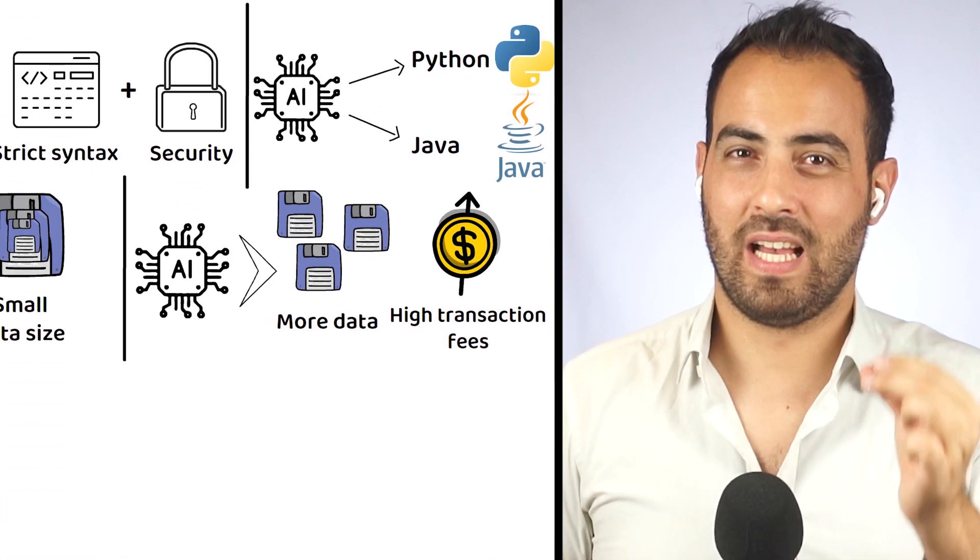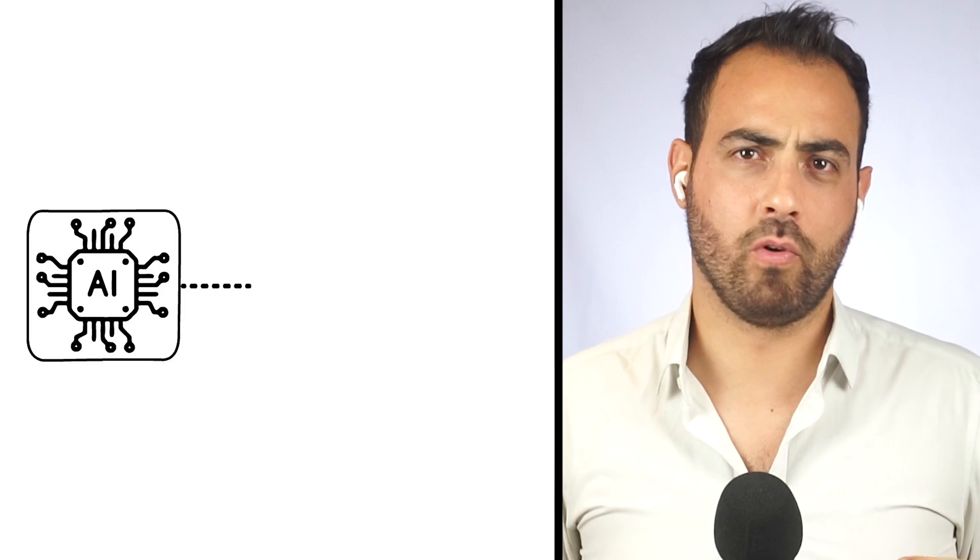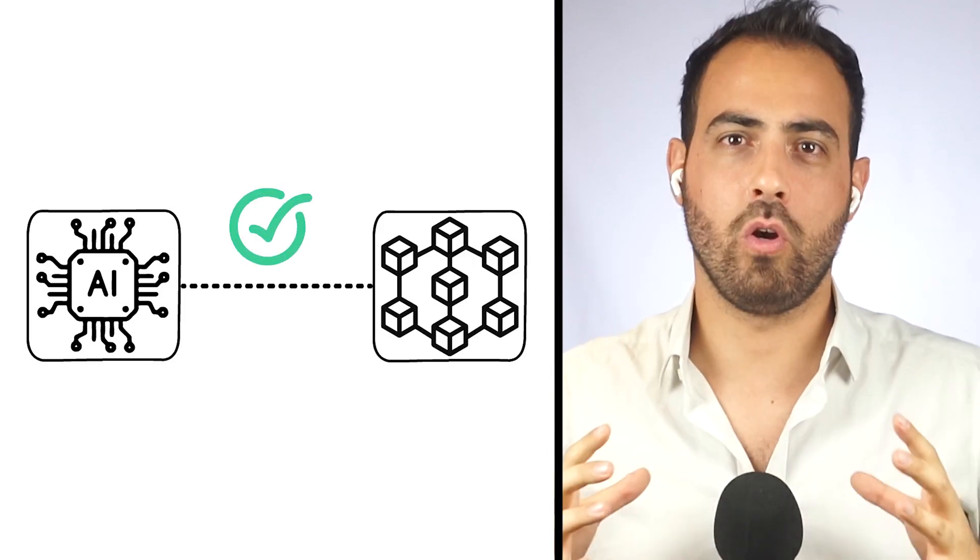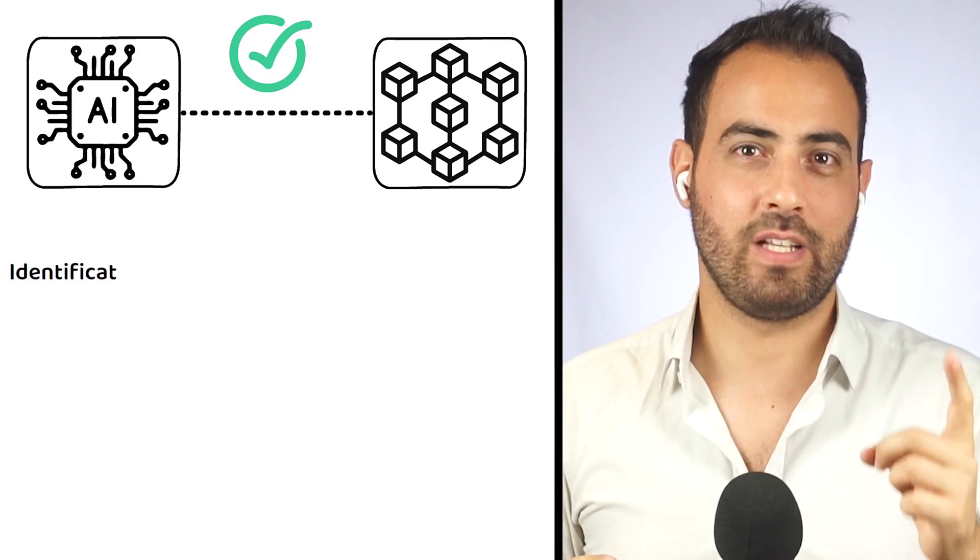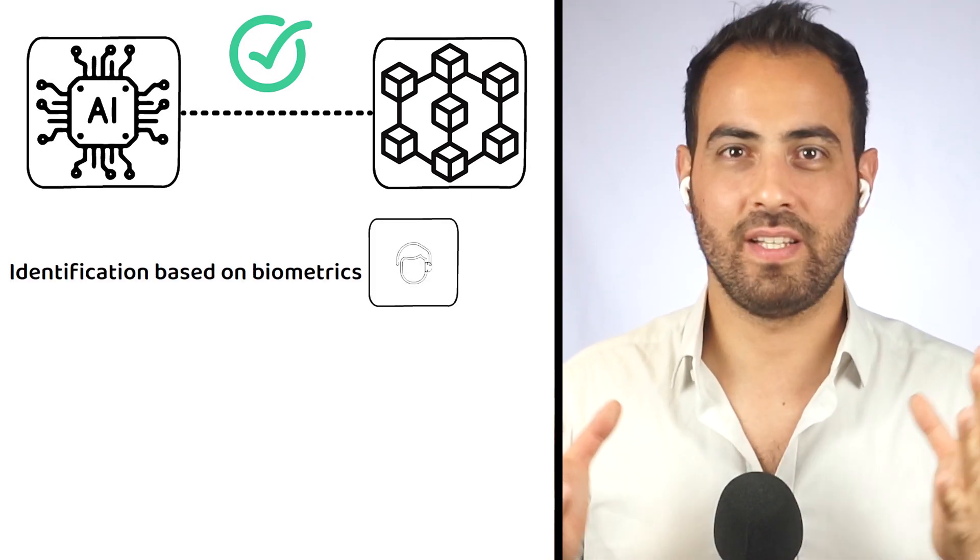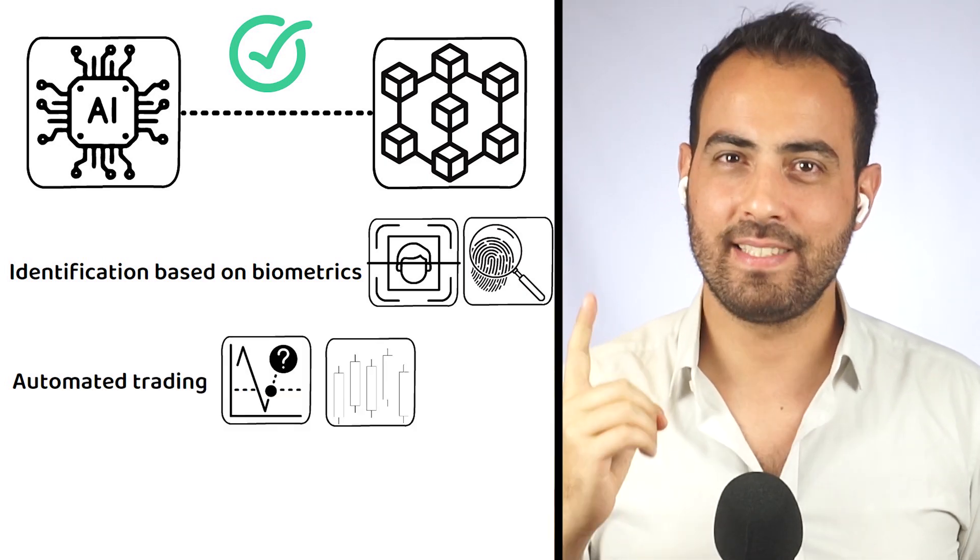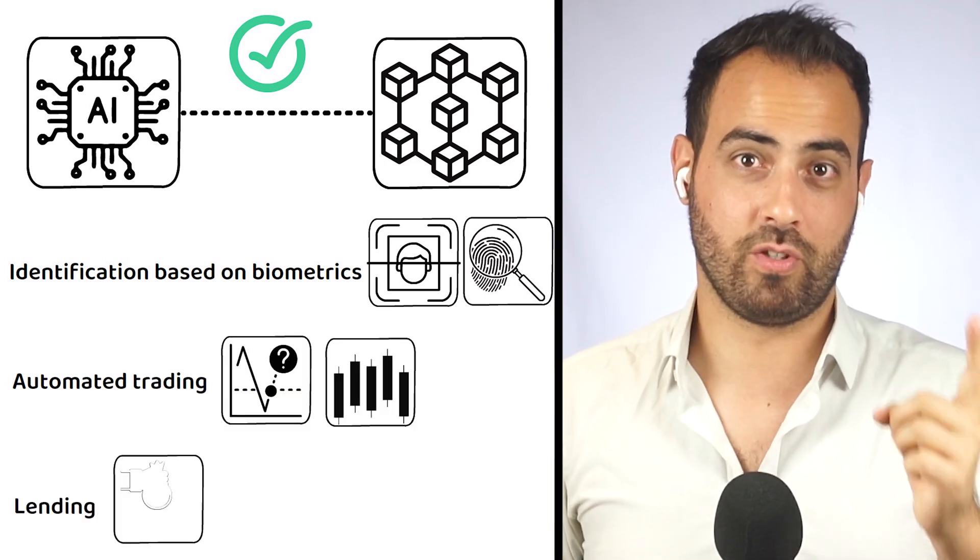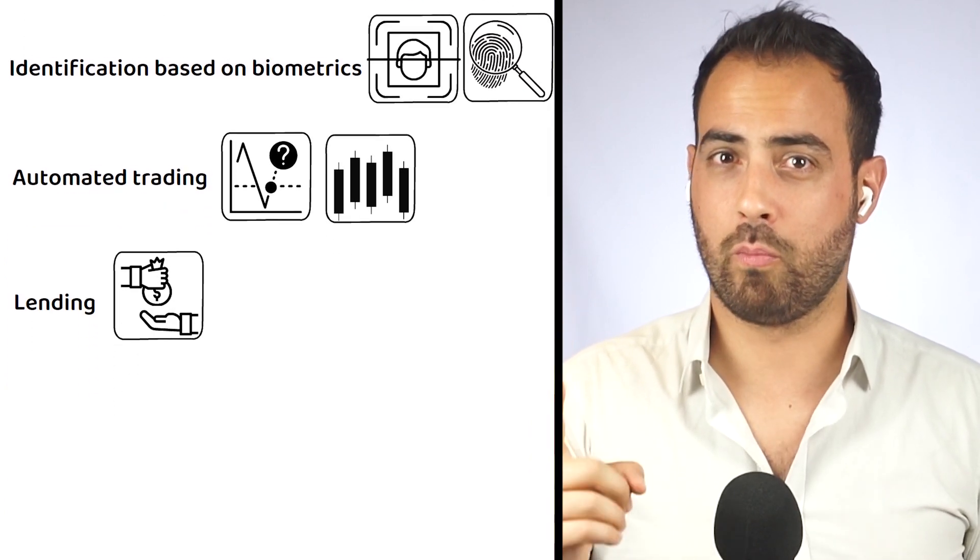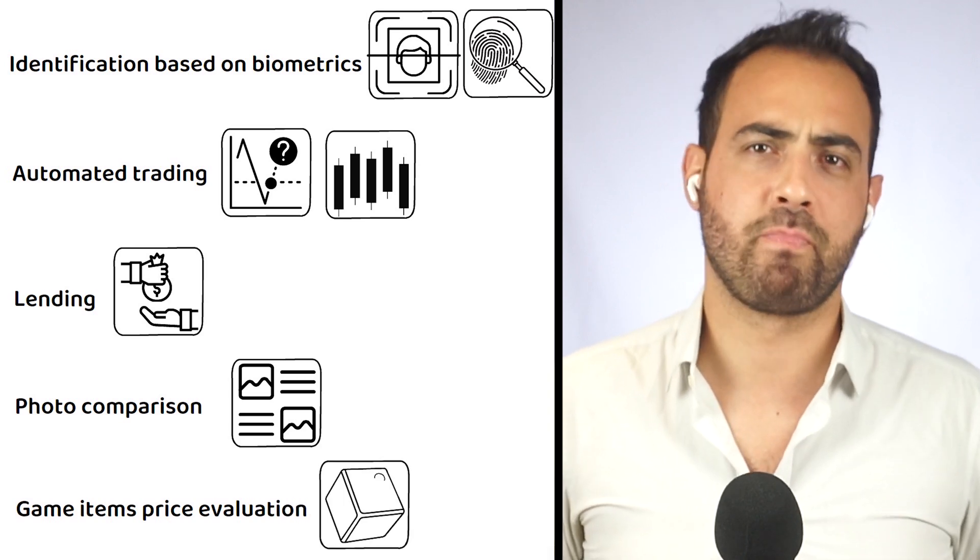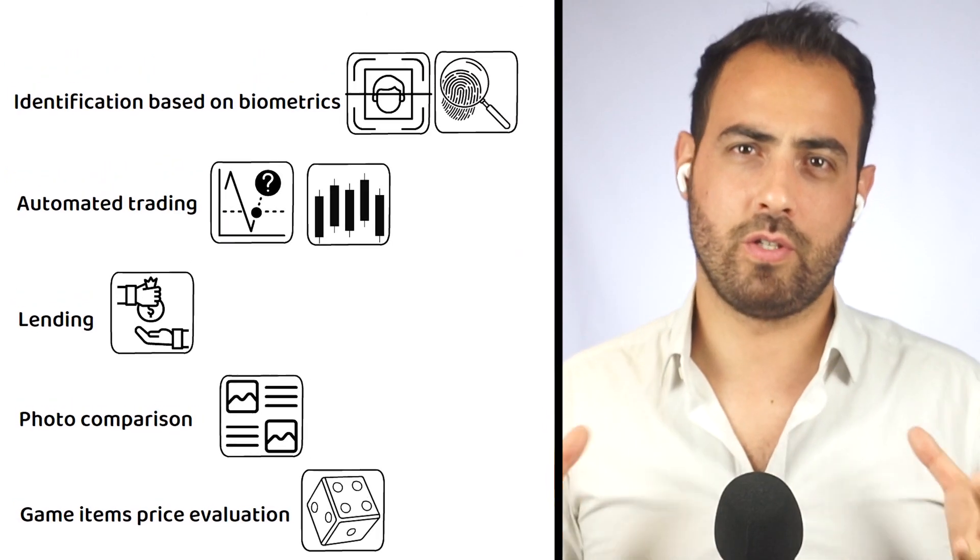Although, there are some areas where AI could be useful, and according to Orichain's website, those would be the following: identification based on biometrics such as face and fingerprint, automated trading based on price prediction and AI strategies, lending based on credit scores, comparison of two products from their photos, evaluating the price of game items.